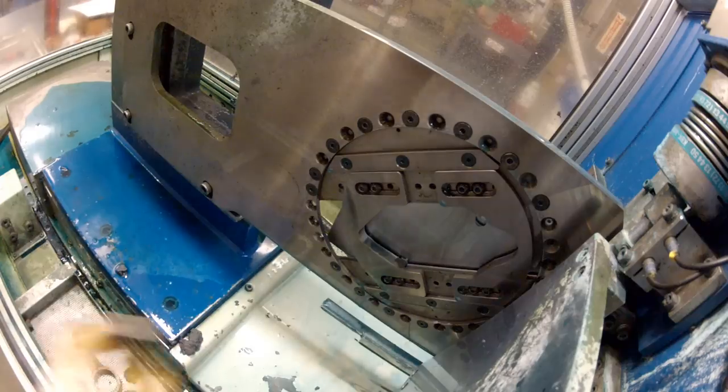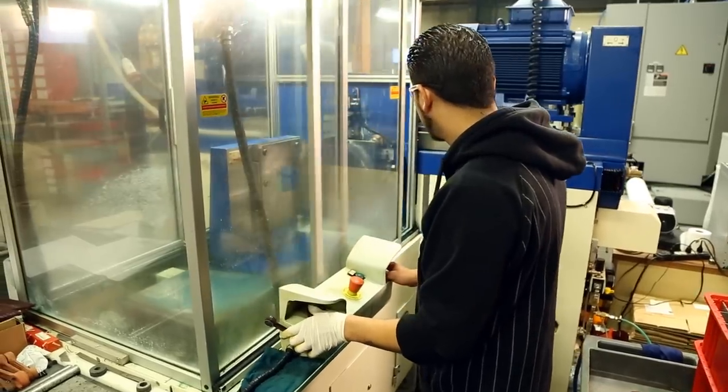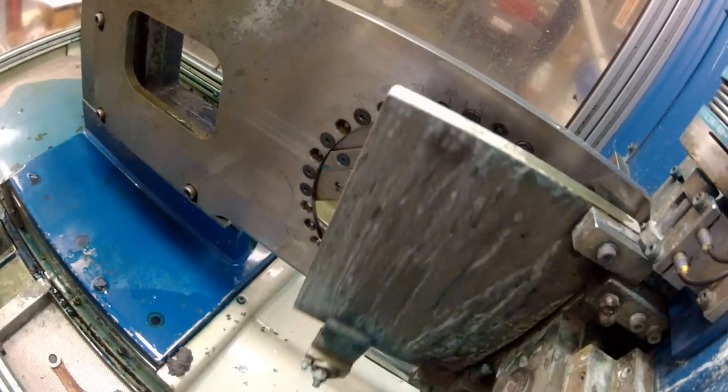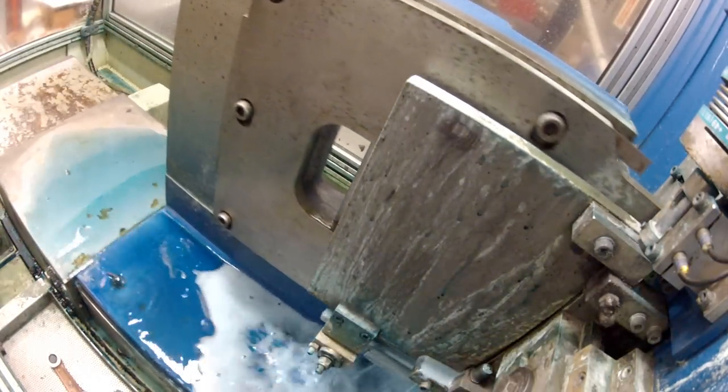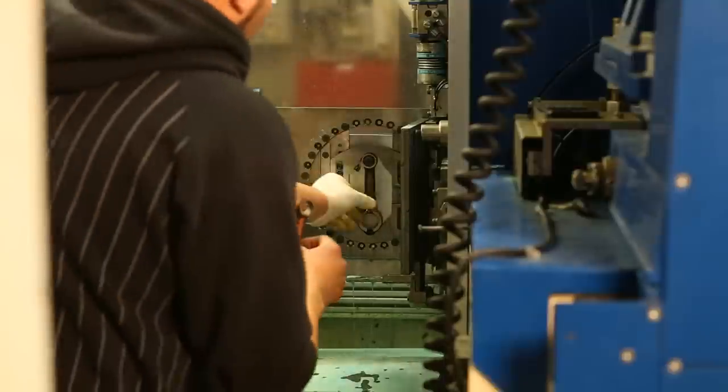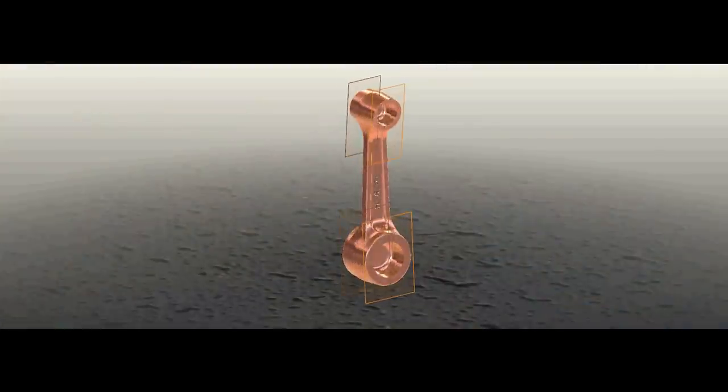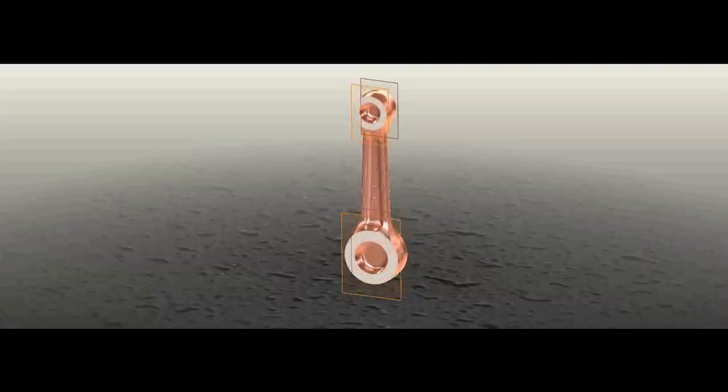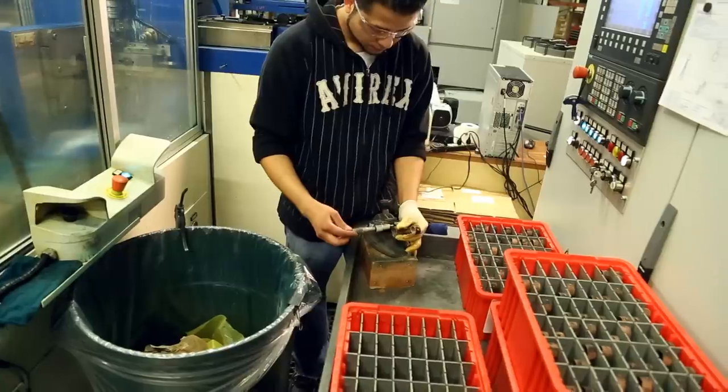After heat treatment, the rods are returned to be finished ground to their final specified width. Going through the CNC grinder a second time, this last grinding process is the most critical to ensure the rod surfaces are perfectly straight because after heat treatment, the surfaces become distorted. The grinder makes each surface perfectly flat within five microns or two ten-thousandth of an inch and each part is hand inspected by the operator with a micrometer for overall dimensional consistency.